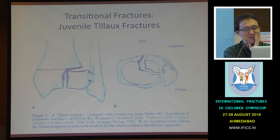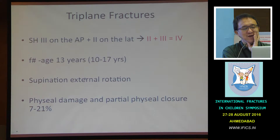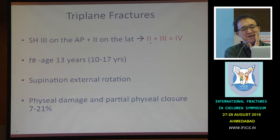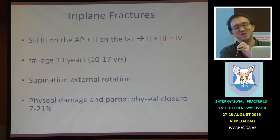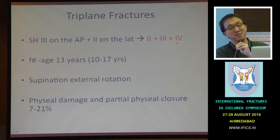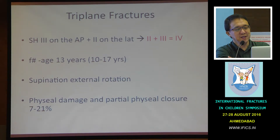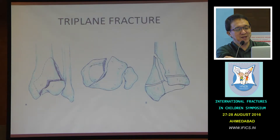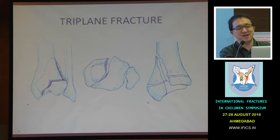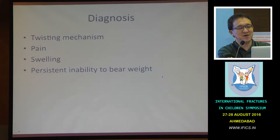For triplane fractures, typically for the two-part type, you get Salter-Harris 3 on AP and Salter-Harris 2 on the lateral view. I used to teach my residents this horrible mnemonic: 2 plus 3 equals 4. Simply because when you have 2 plus 3, it behaves like a bad type 4, so you must treat it as a type 4 — you must get a proper reduction. So it looks like a type 3 on your AP view but will be a type 2 on your lateral view. Therefore, 2 plus 3 equals 4.